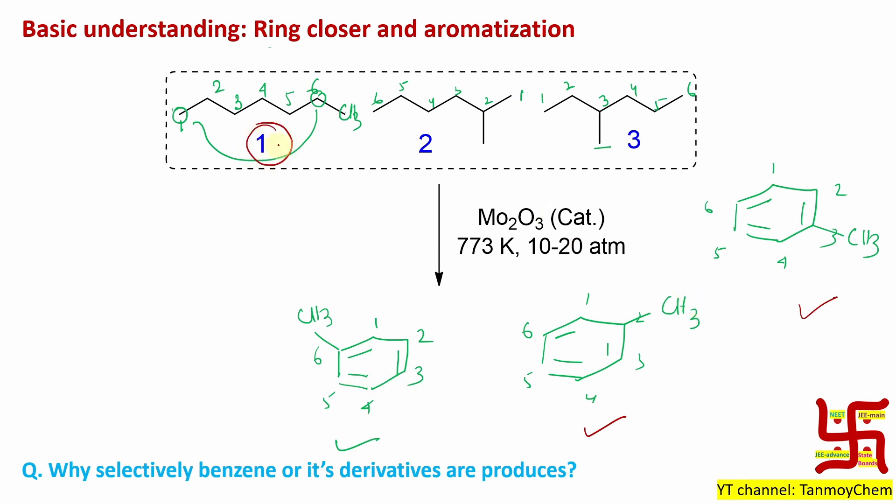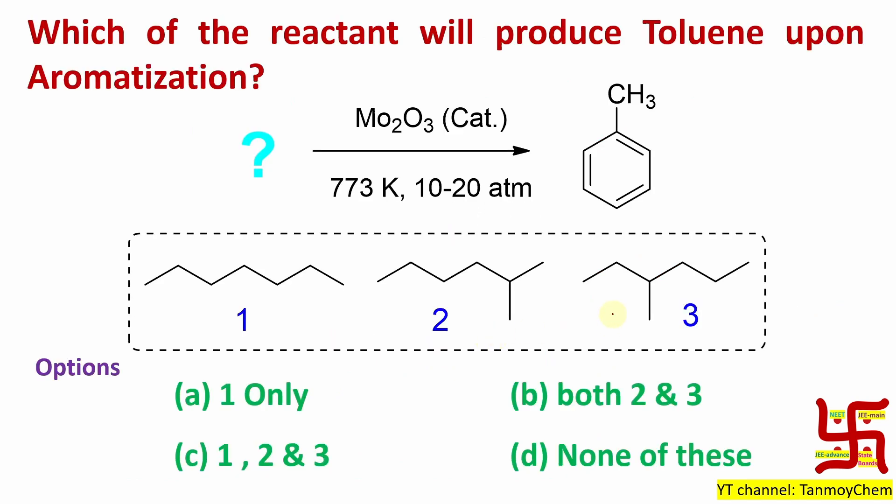So actually question number one, two, and three all will result in toluene under these reaction conditions. Why selectively benzene or derivatives are produced? Because of aromaticity. Benzene is stable because it's resonance stabilized, it's aromatic according to the Huckel rule. So what will be the answer? All of this. So answer option C is the right answer.